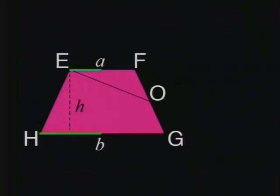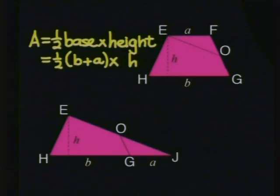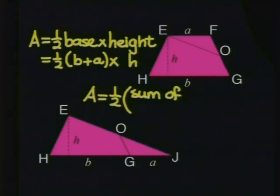What do you notice about a and b? They are the parallel sides of the trapezium. So, we can write the area of the trapezium as half the sum of parallel sides multiplied by the perpendicular height.